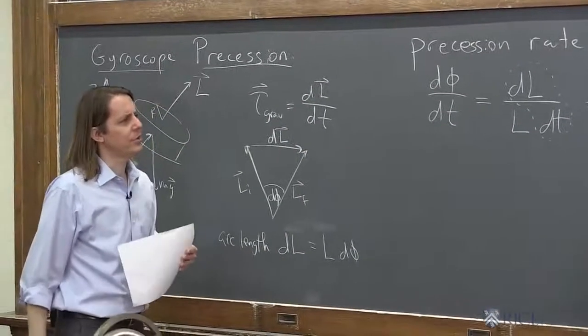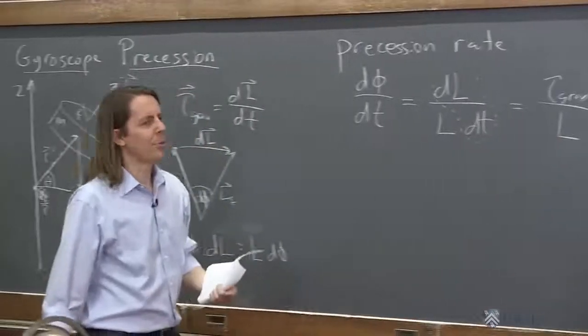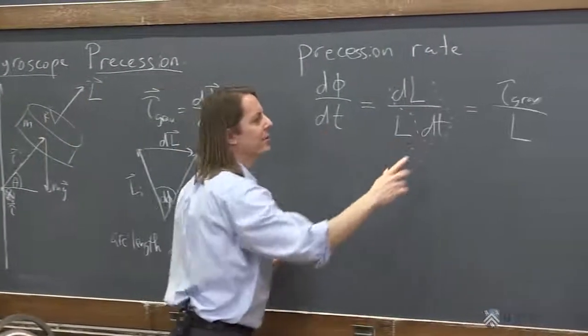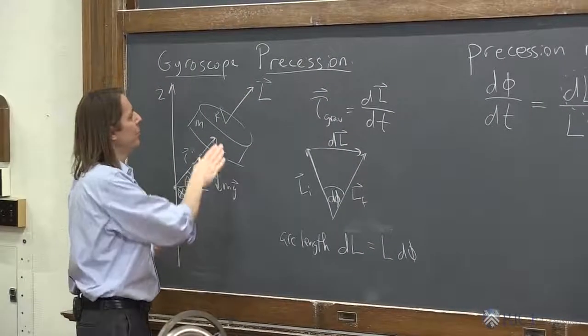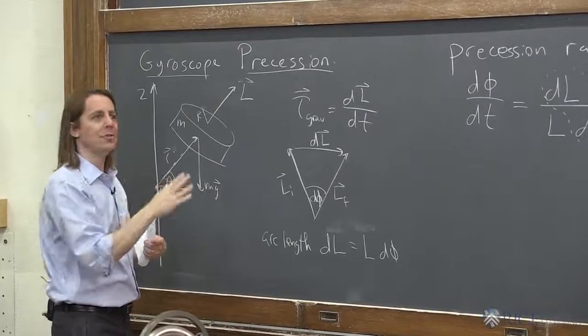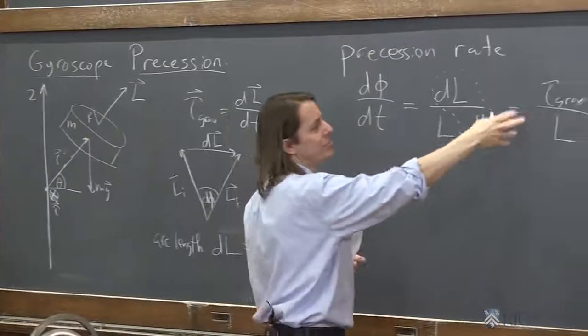So then we know that it's just the gravitational torque is the only torque in the problem. So what this shows us is that the precession rate is the torque divided by how much angular momentum the object has. So the harder you pull on it, the faster it goes around. That kind of makes sense. But also, the bigger the momentum it has, the slower it goes around because it's hard to change something's momentum.